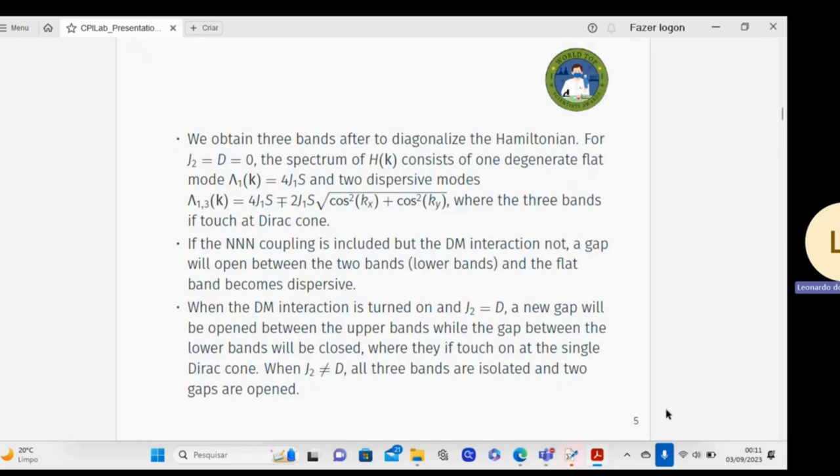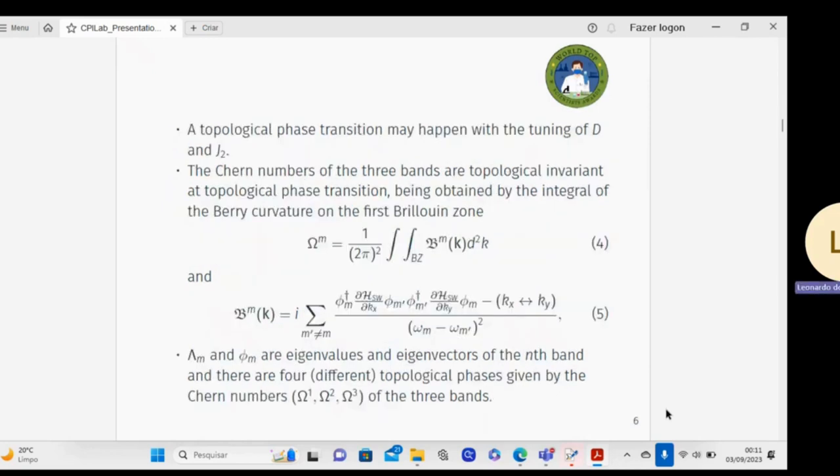I obtained three different specific modes, one specific mode and two other modes. The topological phase transition may happen with the tuning of D and J2. The Chern numbers of the three bands are topological invariants. A topological phase transition is obtained by the integral of the Berry curvature on the first Brillouin zone given by equation 4 and the Berry phase is defined by equation 5.